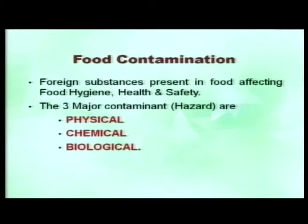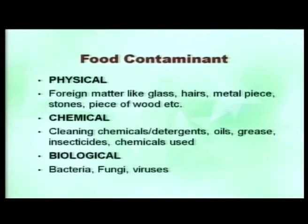There are different types of contamination that can occur — physical, chemical, or biological. A contaminant is a foreign substance present in food which can cause an ill effect to a person who consumes it. Physical contamination is something which can be seen with the naked eye and includes any foreign matter like glass, hair, metal piece, stones, wood piece, paper, plastic, a piece of screw — anything visible that can create a problem is called a physical hazard.